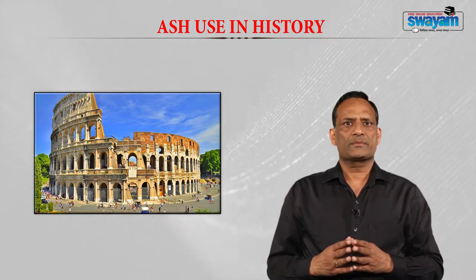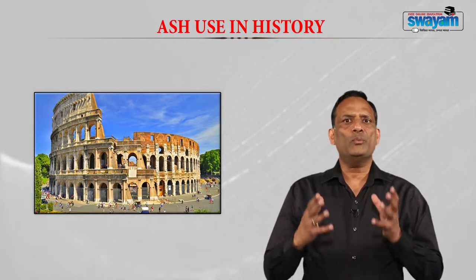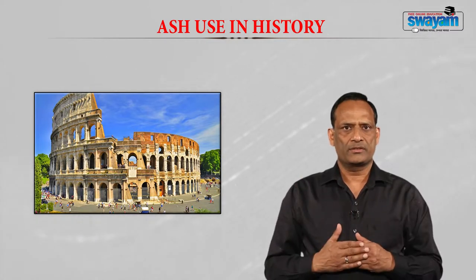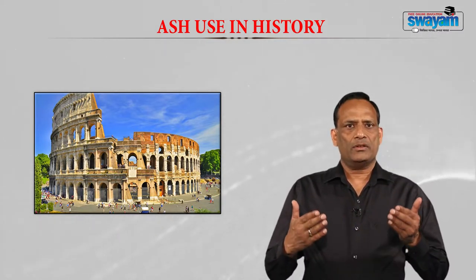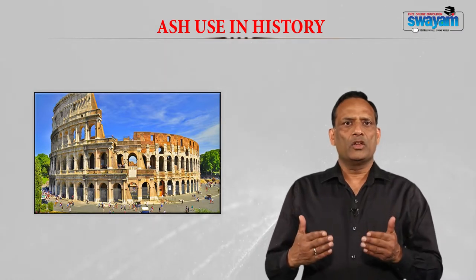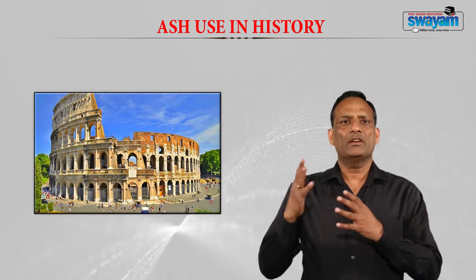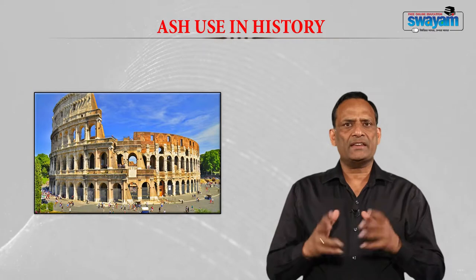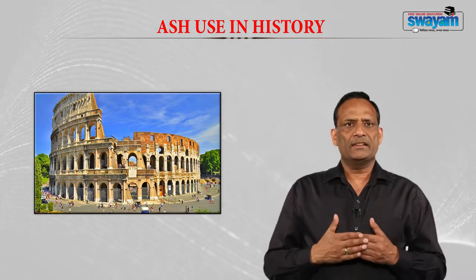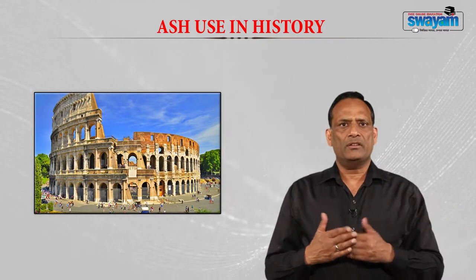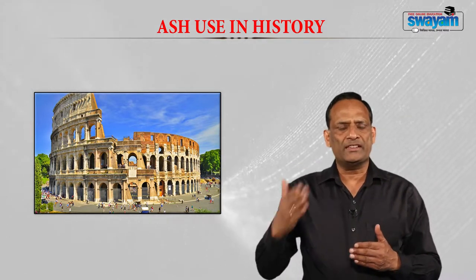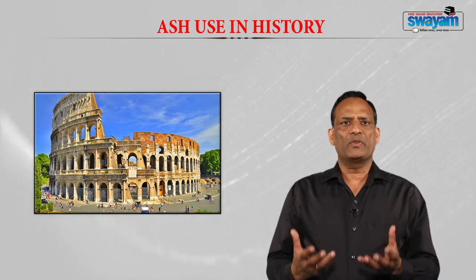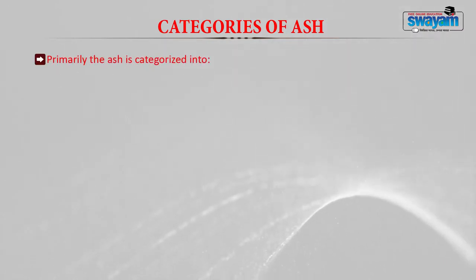Ash from volcanoes has been used in the construction of many Roman structures. Fly ash has been used to build the Roman Colosseum about 2,000 years ago. Volcanic ash is essentially the same as fly ash — the only difference is that volcanic ash is produced by natural activities, whereas fly ash is produced anthropogenically by the burning of pulverized coal. Ash is primarily categorized into three categories.